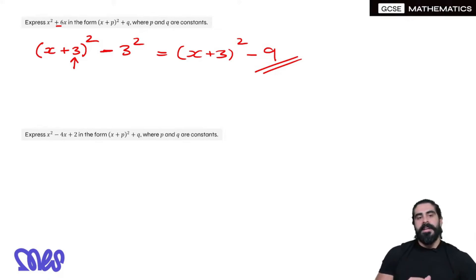The next one is: express x² - 4x + 2 in the completed square form. Now remember, completing the square only is applied to the first x² and x terms. The plus 2, forget about the plus 2, it doesn't do anything.